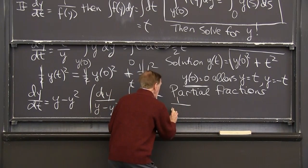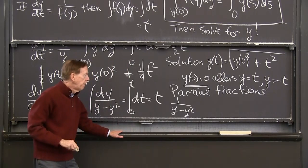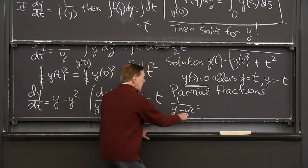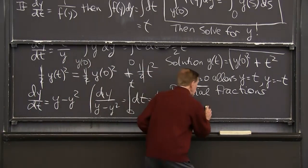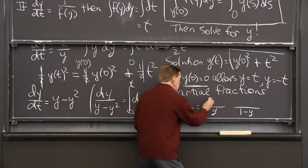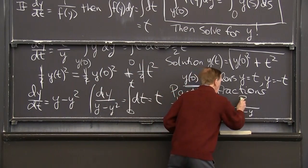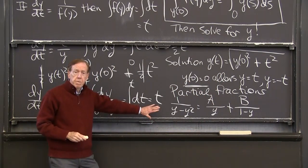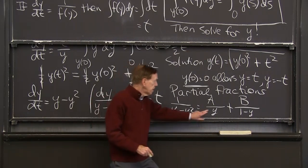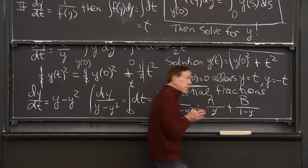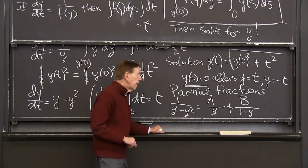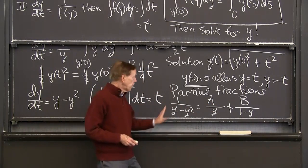And I'll just say here what it means. It means that I want to write this 1 over y minus y squared in a nicer way. 1 over y minus y squared can be split up into two fractions. Those are the partial fractions. So I'm going to factor that. y minus y squared factors into y and 1 minus y. And the partial fractions will be some number over y and some other number over the 1 minus y. This is just algebra now. Partial fractions is just algebra. It's not calculus.